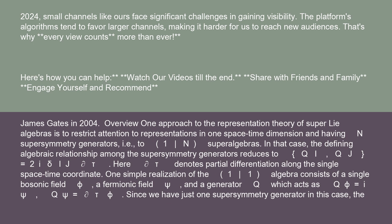In that case, the defining algebraic relationship among the supersymmetry generators reduces to {Qi, Qj} = 2i δij ∂t. Here ∂t denotes partial differentiation along the single spacetime coordinate.